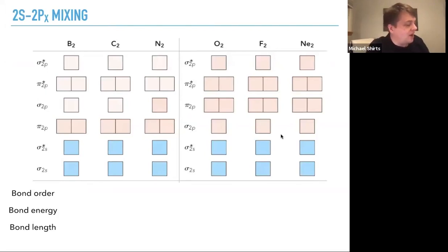N2, I've got the pi 2p lower in energy and the sigma 2p higher in energy, whereas for O2, F2, Ne2, it's reversed. All the sigma 2p is lower in energy than the pi 2p. Remember the pi 2p's, those are all both the same energy.